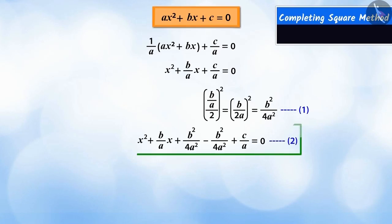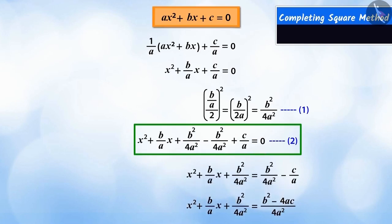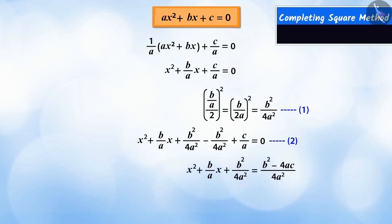This is equation 2. On solving equation 2, we get b to the power of 2 minus 4ac upon 4a to the power of 2 on the right side. And by expressing the left side as the square of a binomial, we get this form of the equation.